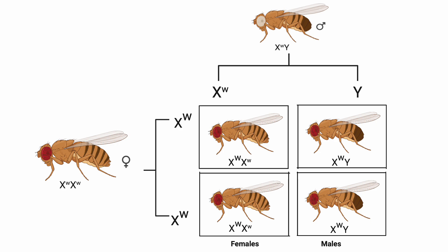This reciprocal cross clearly demonstrates that the white-eyed trait in Drosophila is sex-linked. The gene responsible for eye color is located on the X chromosome. Males with only one X chromosome will express the white-eye trait if they inherit the X^w chromosome. Females with two X chromosomes need to inherit two X^w chromosomes to show the white-eye phenotype.